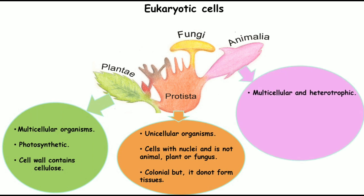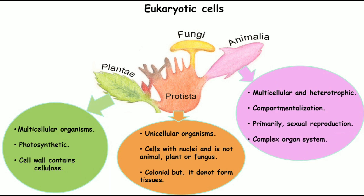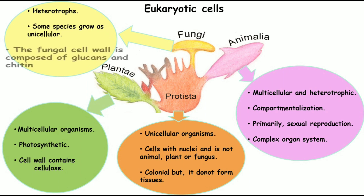Animals are multicellular and heterotrophic — they cannot synthesize their own food and depend on food produced by other organisms. Each organelle is compartmentalized and covered by a membrane. Animals primarily reproduce by sexual reproduction and have complex organ systems such as the heart, kidneys, and liver, which are not present in prokaryotes. Fungi are also heterotrophs, with some species unicellular and most multicellular. The fungal cell wall is composed of glucans and chitin, specific to fungi.